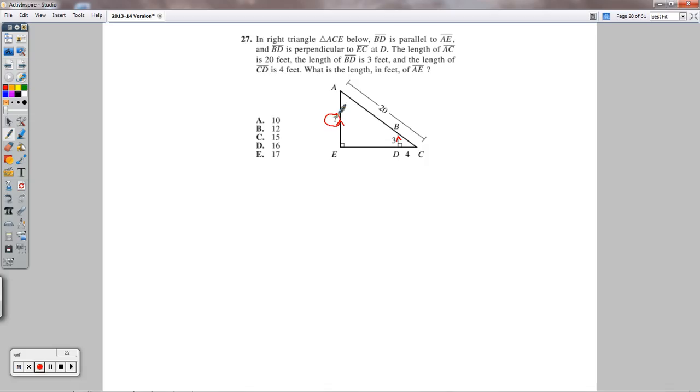So we're trying to figure out what that question mark equals. Since this is perpendicular here and here, and this is parallel here and here, we have two similar triangles - the smaller triangle and the larger triangle. These will be in a proportional relationship. The lengths of these two similar triangles will be proportional to one another.